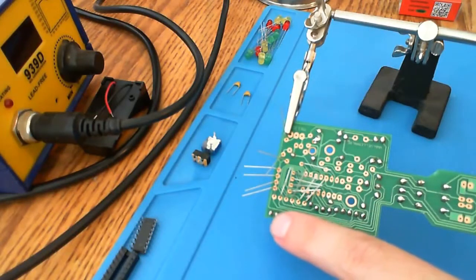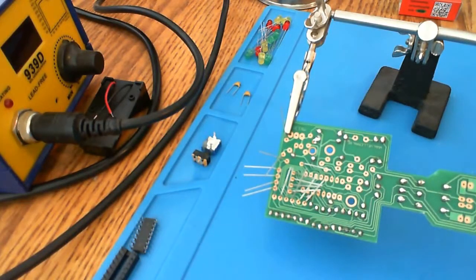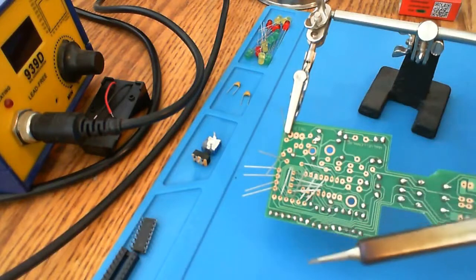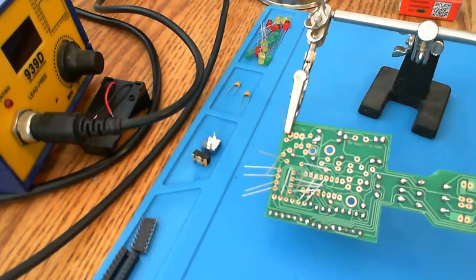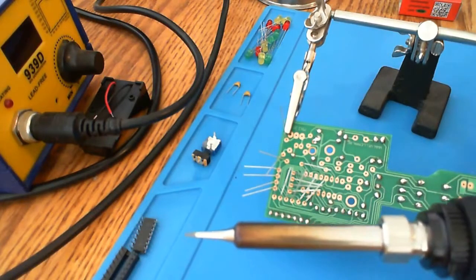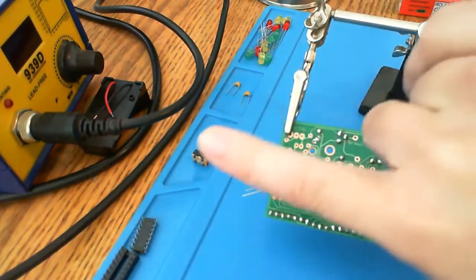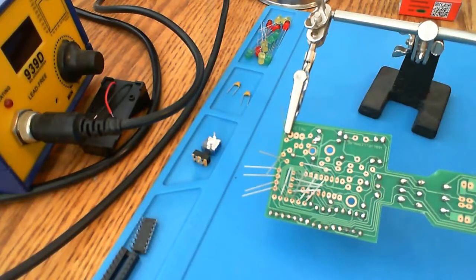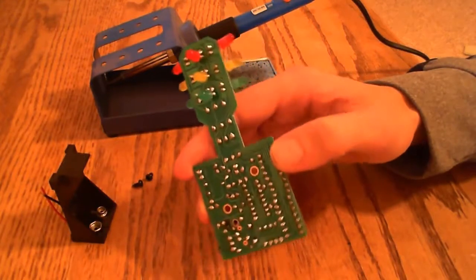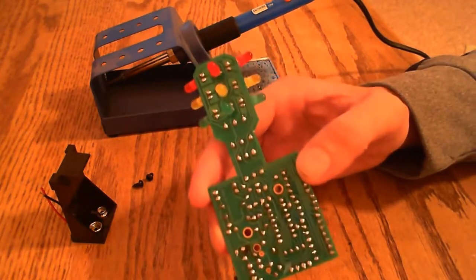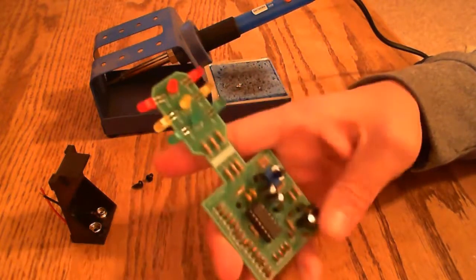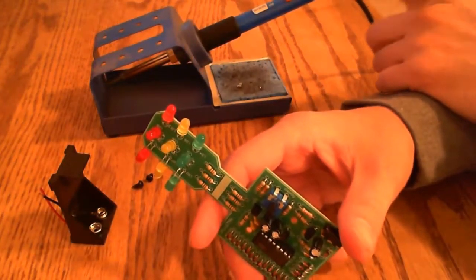Alright, and there we go. And to be honest with you, I actually like this one better than I have liked the Yahuwah 939 so far. And this soldering iron costs $10 and that one costs, I think, like $35 I think, something like that. So there you go. Alright, and there we go. So I finished up the soldering kit here using this soldering iron and I still think that I prefer this one.